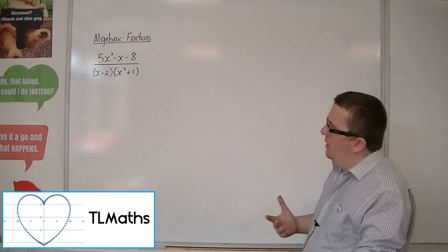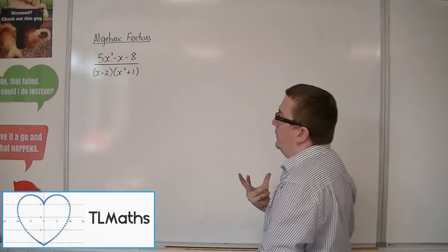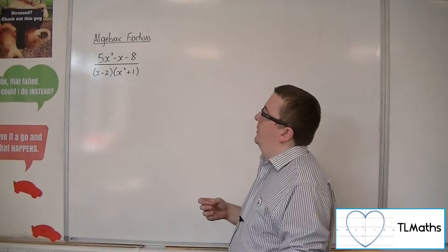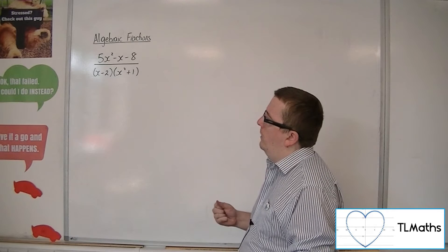Okay, so let's say we've got 5x squared minus x minus 8 all over x minus 2 times x squared plus 1.